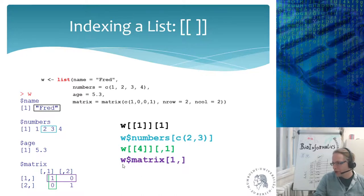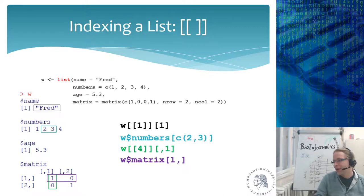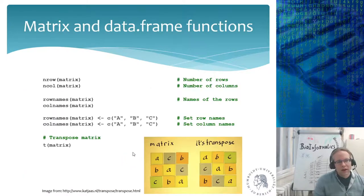The reason double square brackets exist is that lists can have duplicate names — for some reason R allows duplicate names in lists, which happens especially when combining multiple lists. If w has two elements both called 'matrix', w$matrix returns only the first one. To get the second, you must explicitly use the numeric index with double brackets.